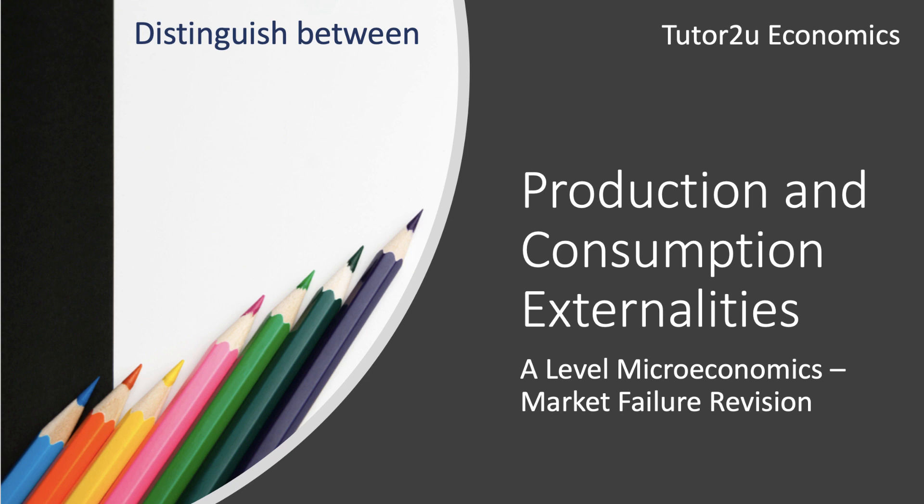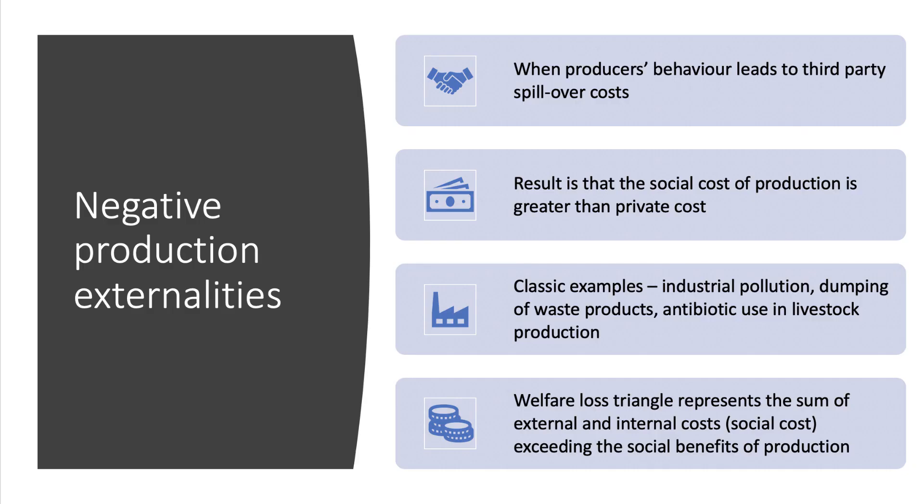Hi there. Lots of students are covering market failure in their revision for economics papers at the moment. So I want to make a distinction in this video between production and consumption externalities. This is a key distinction to make — many students make errors on this in their papers. We'll focus in this video just on negative externalities.